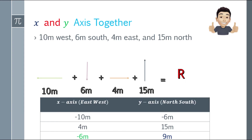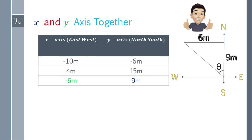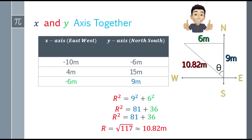Since the answer on the x-axis is negative 6, that will be 6 meters to the west. Positive 9 on the y-axis means 9 meters north. Now that we know the x and y components, we can solve for the resultant using the Pythagorean theorem. r² = 9² + 6² = 81 + 36 = 117. Taking the square root, the resultant will be 10.82.